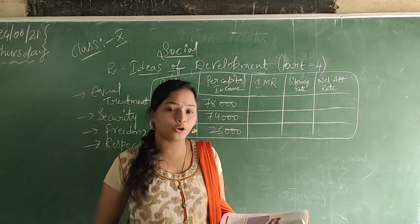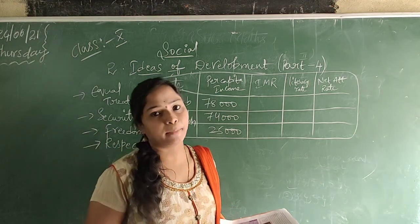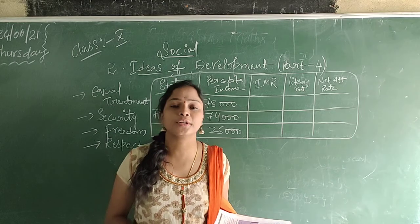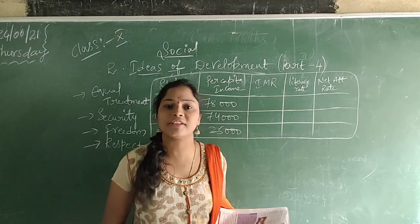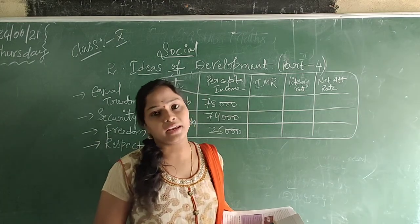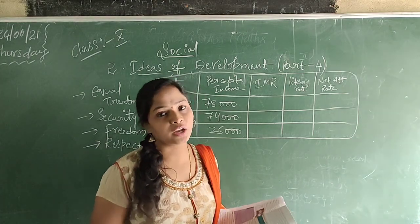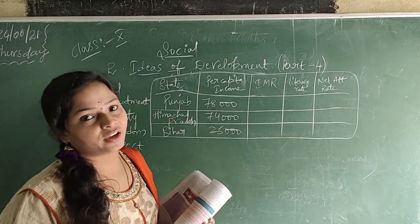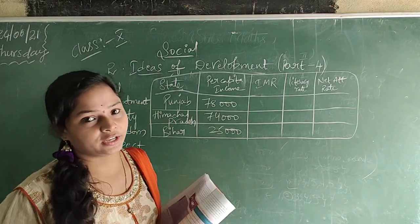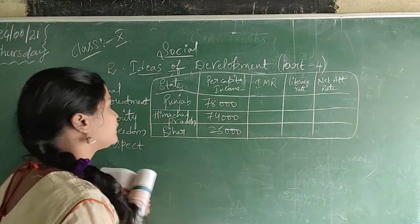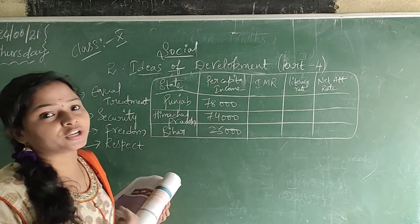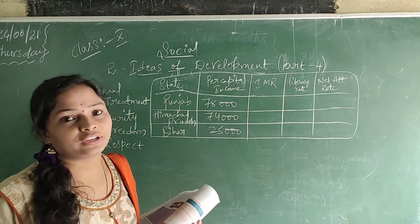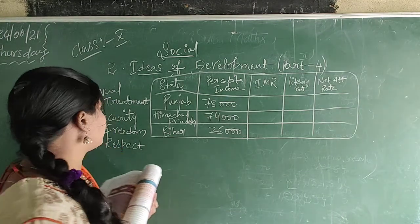Now in Part 4, we are discussing about income and the other criteria. Previously we discussed about income and other goals. Now we are discussing about income and the criteria of the country. Criteria means what is important to the country and what features are going on in the country.